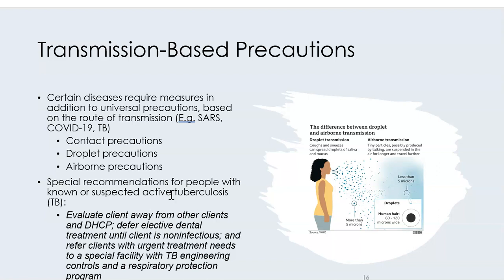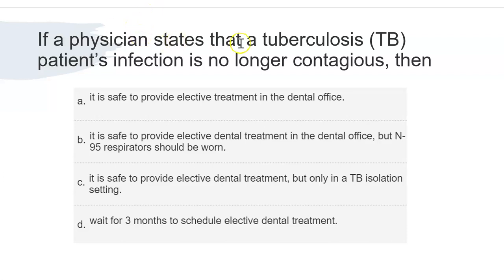Question: If a physician states a TB patient is no longer contagious, is it safe to provide elective treatment — in a regular office, with N95 worn, only in a TB isolation setting, or wait three months? The answer is: if the doctor says the TB is no longer contagious, you can provide elective treatment in a regular dental office. Non-contagious status typically occurs within two to twelve weeks after initial infection. The doctor will advise whether the patient is still contagious.